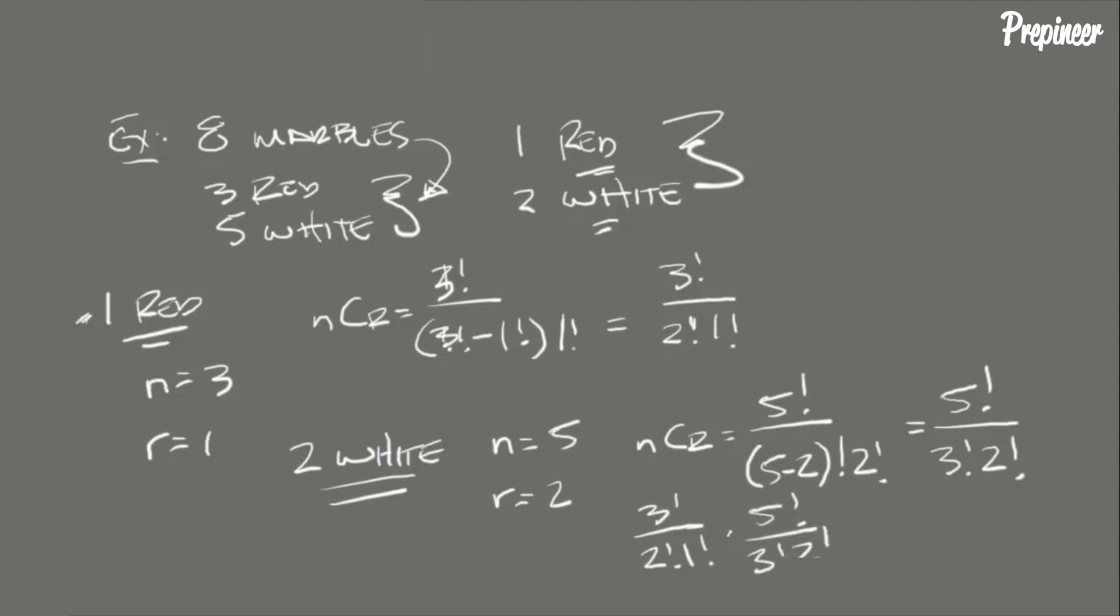...and we can just use our calculator, which would probably be the simplest way, but you can simplify each of these to simpler terms. So we got 3 over 1 multiplied by 5 times 4 divided by 2 times 1, and that equals 30. So out of the 56 possible draws that we determined in the first part, 30 of those would contain one red and two white marbles.